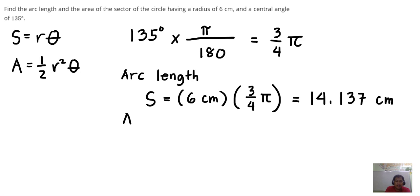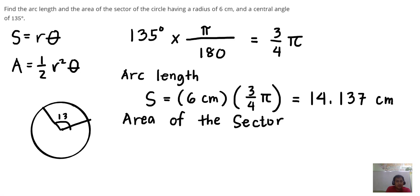And then for the area of the sector, this is a circle with central angle of 135 degrees. We have solved for the arc length, now we are solving for this area. So what is the area of this one?